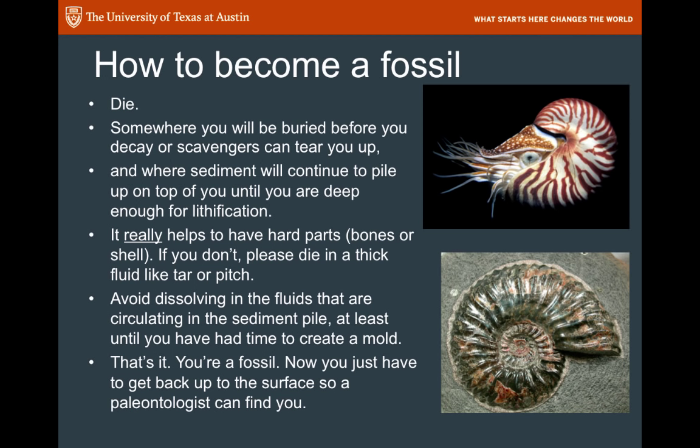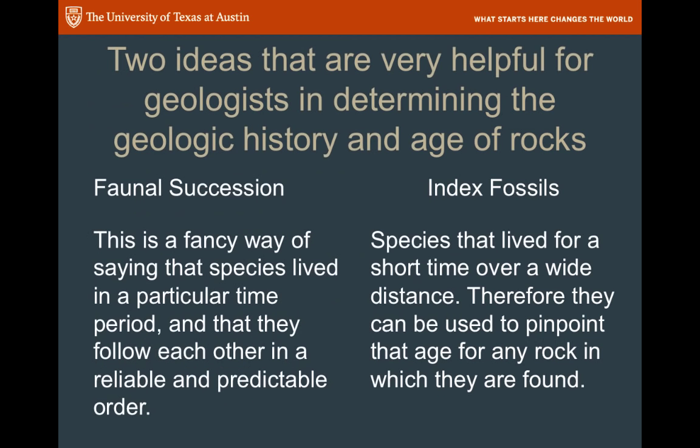That makes it a little hard to use the fossil record as a complete record of life through time, but it gives us an awfully good picture. Two ideas that geologists use in evaluating the fossil record are faunal succession and index fossils. Faunal succession is a fancy way of saying that species lived in a particular time period and follow each other in a reliable and predictable order.